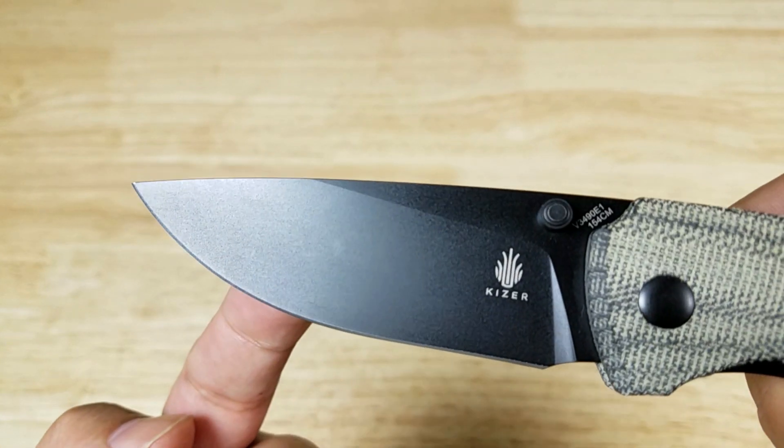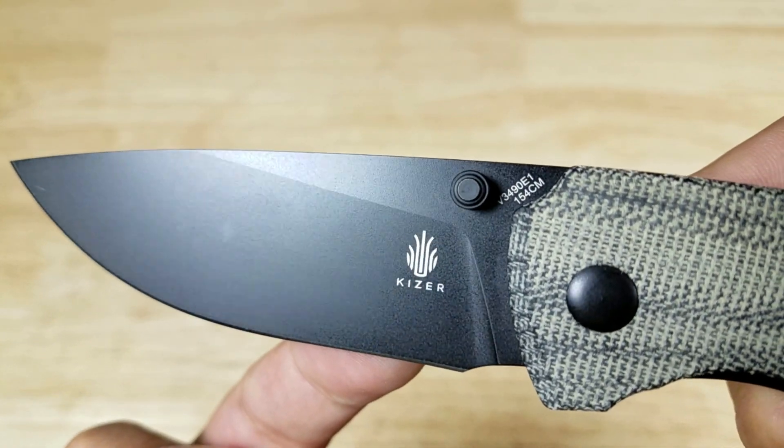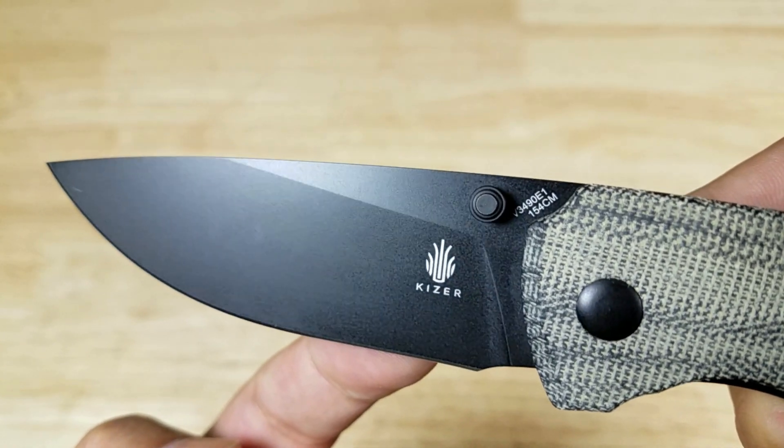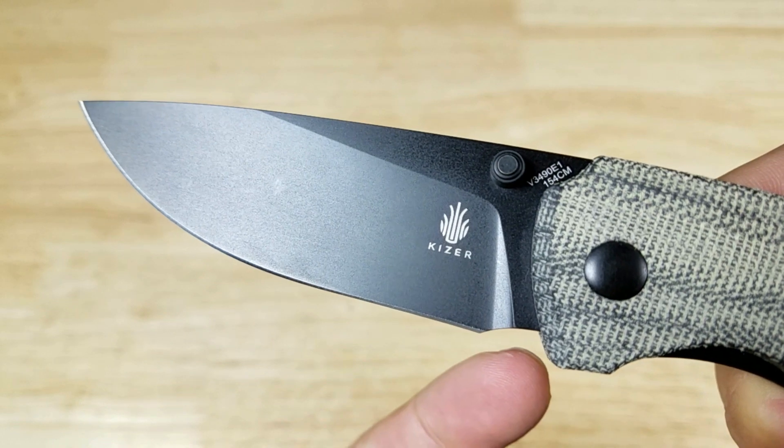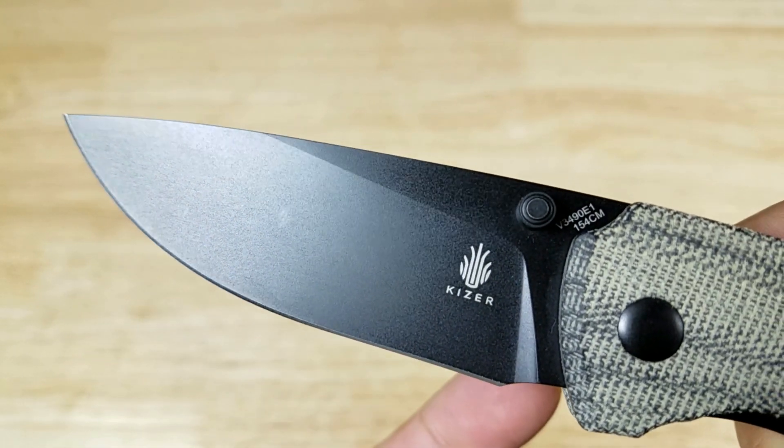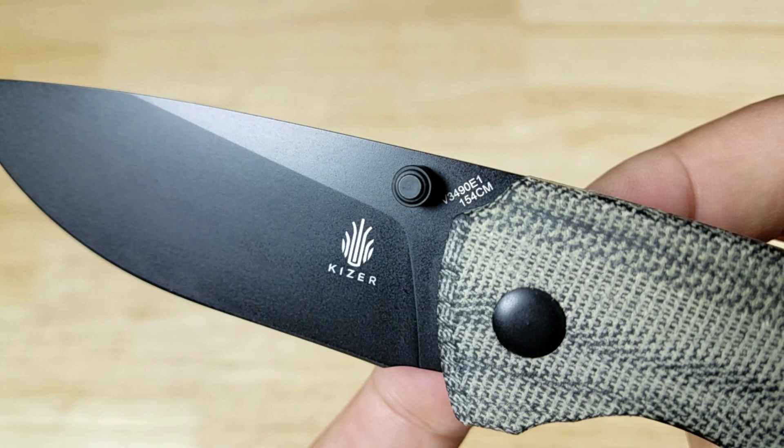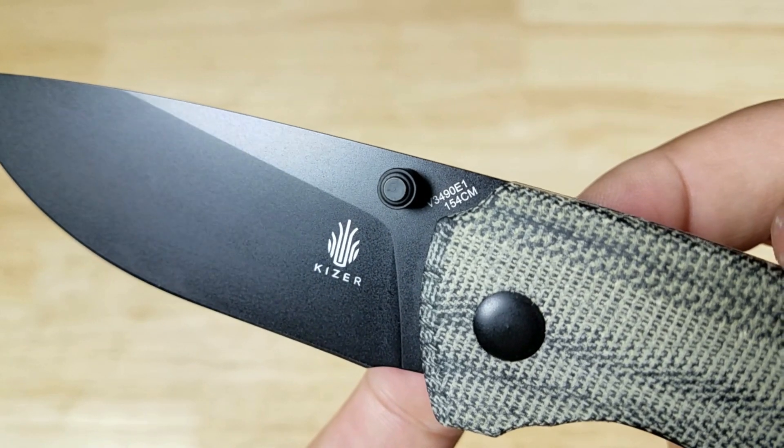Let's have a look at this beautiful black finish. Kaiser logo here. Alright, we have a nice sharpening choil that's gonna allow you to sharpen the blade from the tip all the way down to the base of the blade. And if you look right in here, we can see the steel type. It's 154 CM.